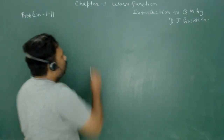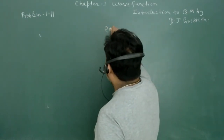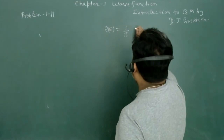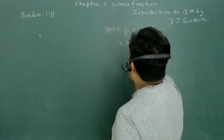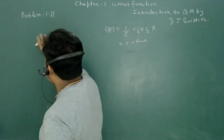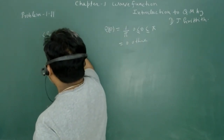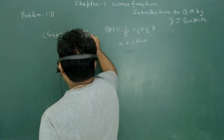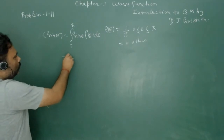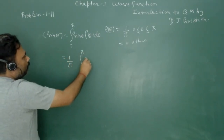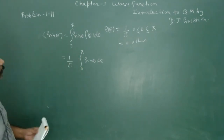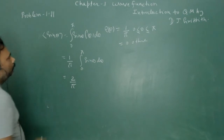Now we calculate the expectation values. We already know ρ(θ) = 1/π for all θ between 0 and π. For ⟨sin θ⟩: it equals ∫₀^π sin θ · (1/π) dθ = (1/π) ∫₀^π sin θ dθ, which evaluates to 2/π.